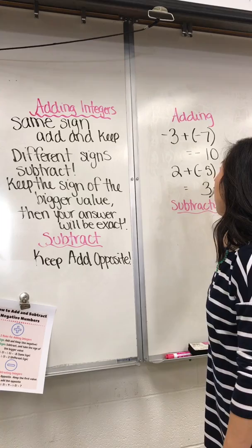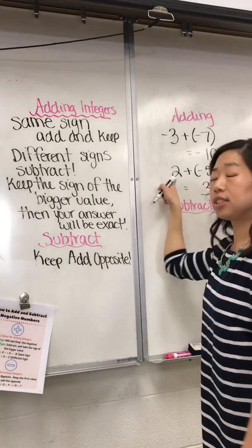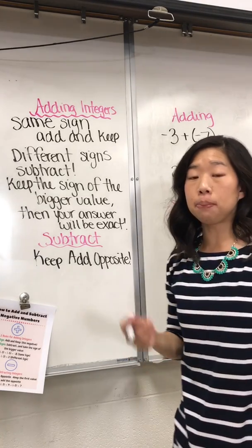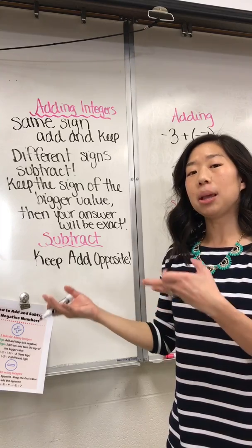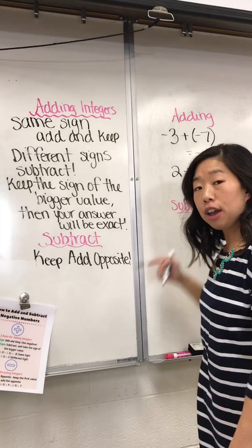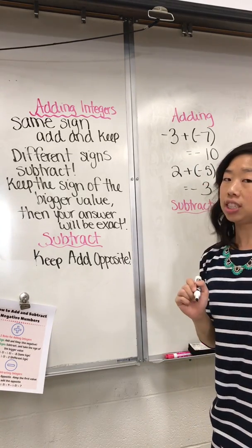Technically, negative five is smaller than positive two. But the absolute value of negative five is going to be positive five, which is bigger than the absolute value of two. And since my absolute value of negative five is bigger and this is negative, my answer is going to be negative.